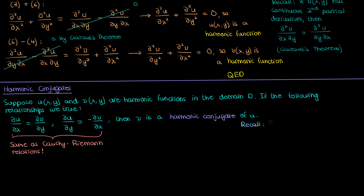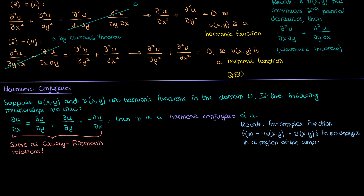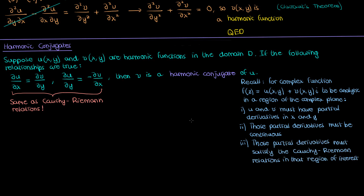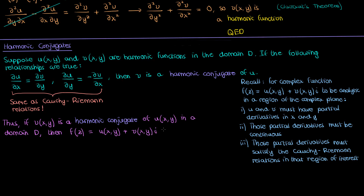Recall from the video on the Cauchy-Riemann relations that for a complex function f of z consisting of a real part u and imaginary part v, for this function to be analytic, u and v have to have continuous partial derivatives in x and y, and the Cauchy-Riemann relations have to be satisfied in that domain of interest. So if v is a harmonic conjugate of u in the domain D, then the complex function f composed of the real part u and the imaginary part v must be analytic in D. This is because all three conditions are satisfied: u and v will have continuous partial derivatives since they are harmonic functions, and the Cauchy-Riemann relations are also satisfied because the harmonic conjugate relationship looks exactly like the Cauchy-Riemann relations.